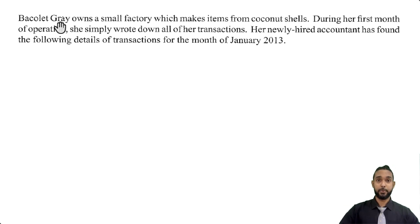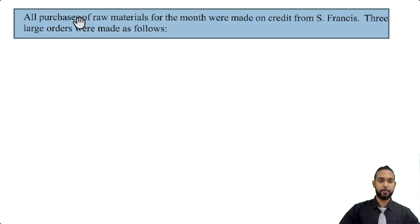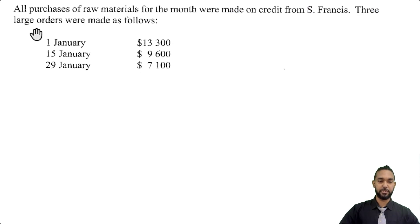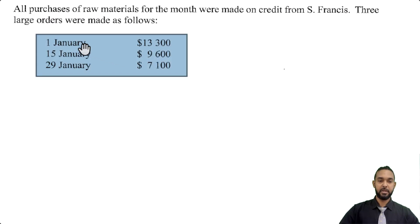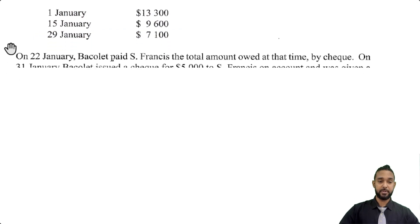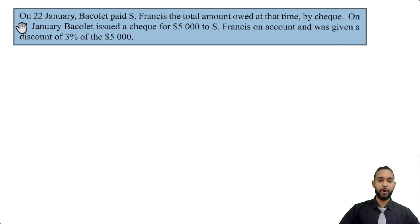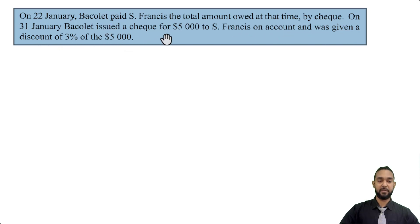All purchases of raw materials for the month were made on credit from S. Francis. Three large orders were made — one on the 1st of January, one on the 15th, and one on the 29th. There's also some additional information: on the 22nd of January, Barclay paid S. Francis the total amount owed at that time by check. On the 31st, Barclay issued a check for $5,000 to S. Francis.